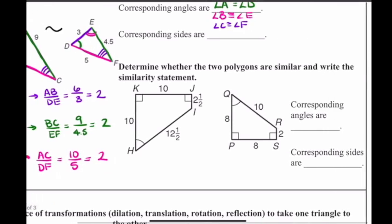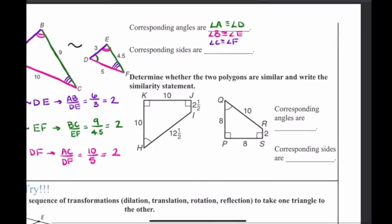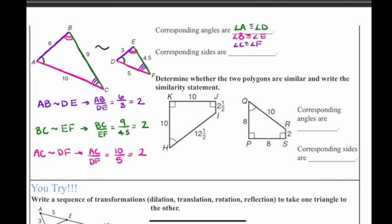The same thing applies when you have polygons with multiple sides. The only important thing is to match the correct angles and sides with each other to determine whether those polygons are similar. Triangle ABC is similar to triangle DEF — here is our similarity statement.